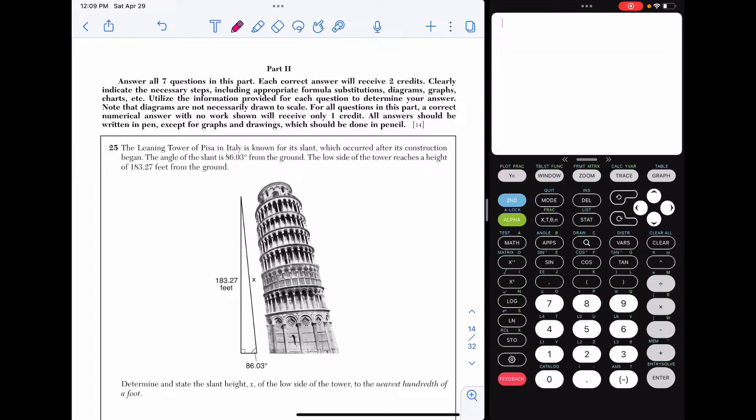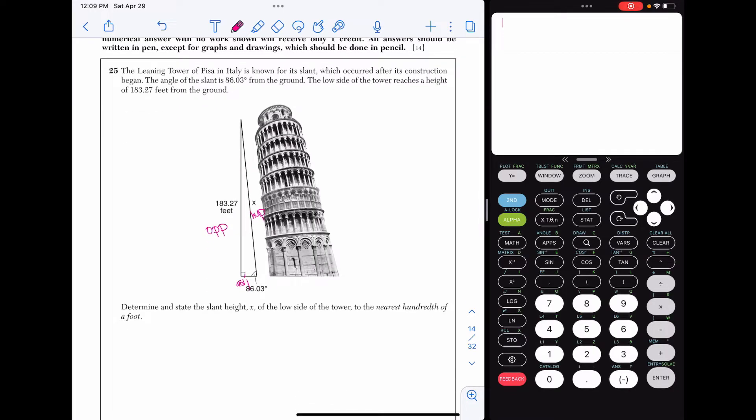We are going to be using SOHCAHTOA for this problem. Given the 86.03, this is our opposite side where we have the height. The adjacent side is the bottom, and we are looking for that slant height, that hypotenuse. Since there is something written on the O side for opposite and the H side for hypotenuse, we are going to be using sine.